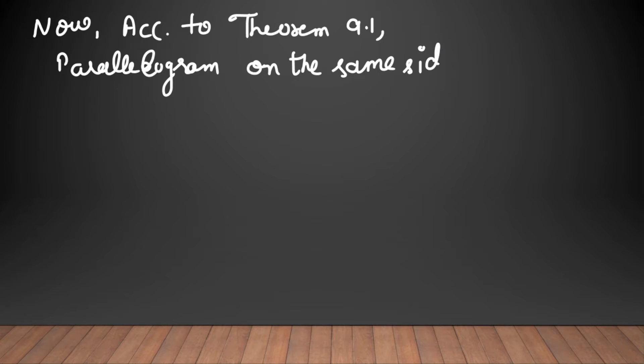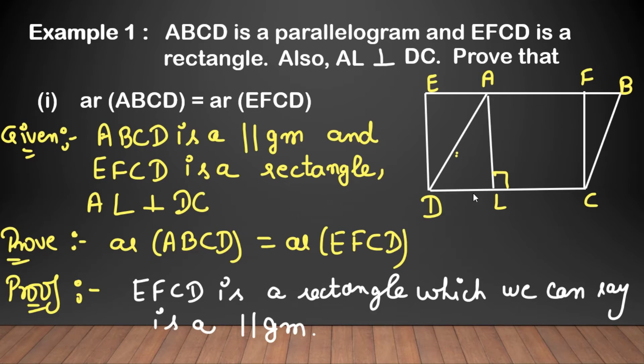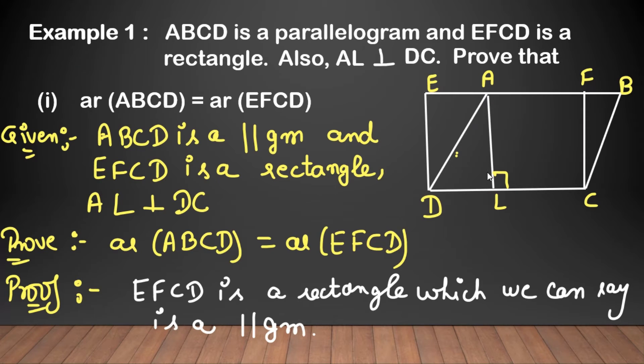Now, according to theorem 9.1, parallelograms on the same base and between the same parallels are equal in area. Kya matlab hua? Woh parallelograms, jinn ka base same ho, aur dono kar rahe hoon between the same parallels, to unka jo area hota, woh same hota hai. Is figure ke according, isme jo parallelograms hain aur jo base hain, woh define kar denge.